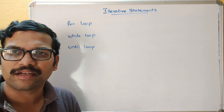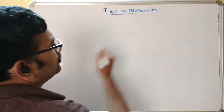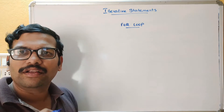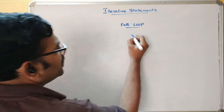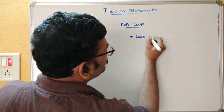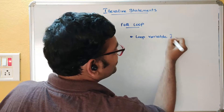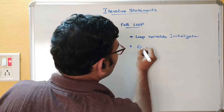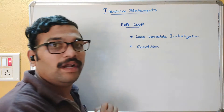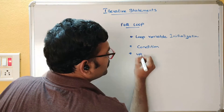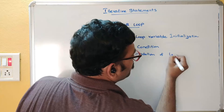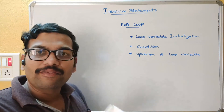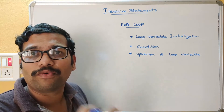Coming to the for loop — whatever iterative statements we use, we need to take care of three things: one is the loop variable initialization, the second one is the condition we need to write, and the third one is updation of the loop variable.